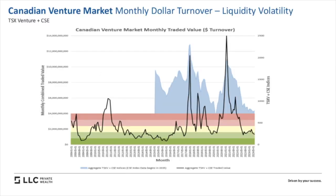So this chart requires some explanation. This is a Canadian venture market monthly dollar turnover. What we've done is taken the TSX Venture Exchange and the CSE and added their combined liquidity together, represented in the black line. The blue shaded part in the background is a sample of the combined index of the CSE and the TSX Venture, just to give you a feel for what that indicator is telling you. Pre the blue line, the CSE was really insignificant — less than 1% of monthly dollar turnover.